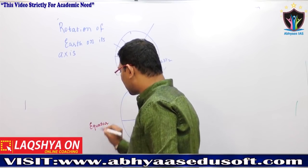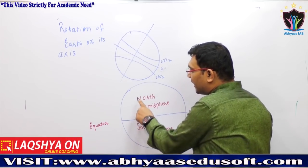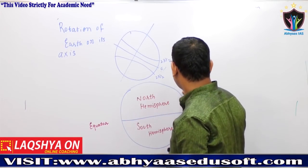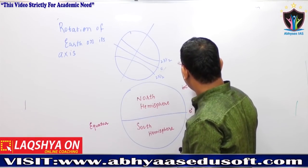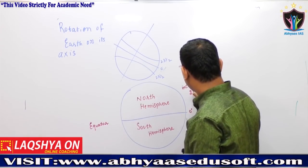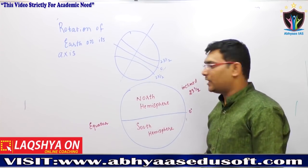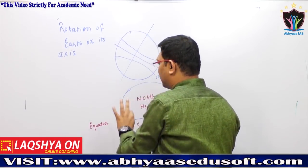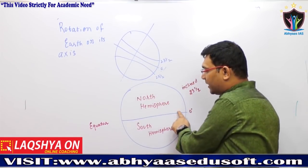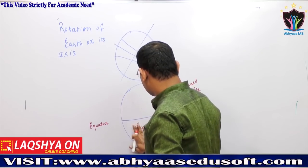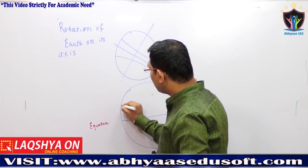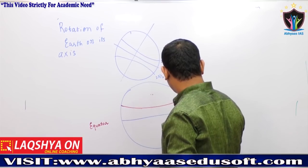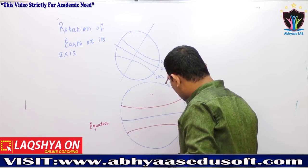The equator divides the earth into two halves: the North Hemisphere and the South Hemisphere. The earth is inclined at 23 and a half degrees. Now, within these hemispheres, there are some important latitudes — 23 and a half degrees north, in the North Hemisphere.